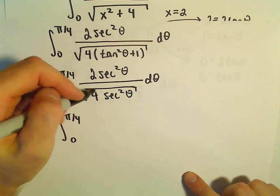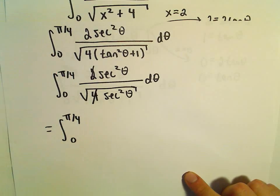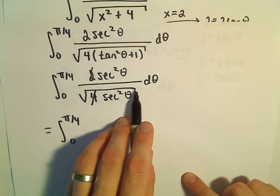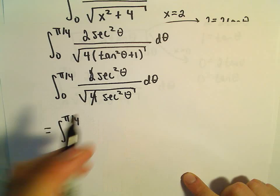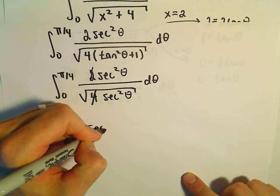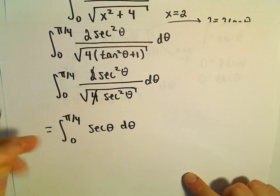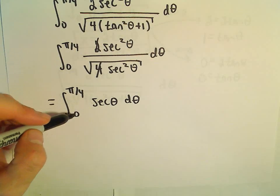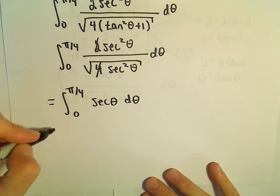The square root of 4 is 2, so the 2's cancel out. The denominator becomes sec(θ), and sec²(θ) over sec(θ) leaves us with sec(θ). We've turned the original problem into the integral from 0 to π/4 of sec(θ)dθ.